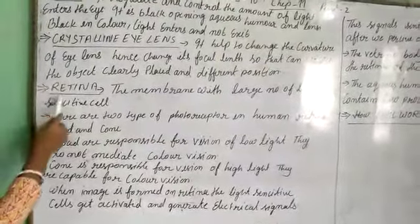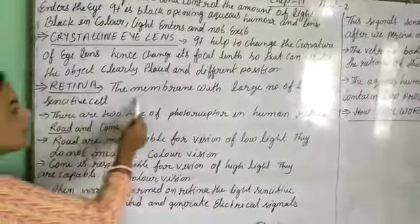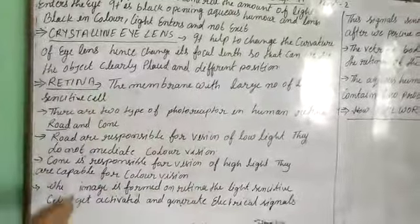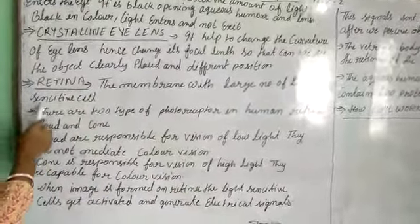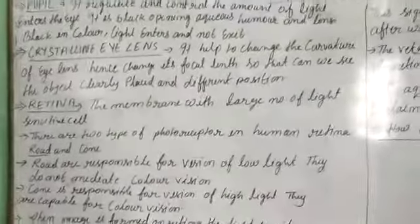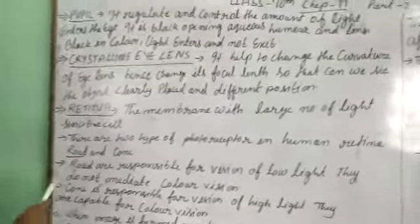Next is the retina. The retina is a membrane with a large number of light-sensitive cells. This is the function of the retina.